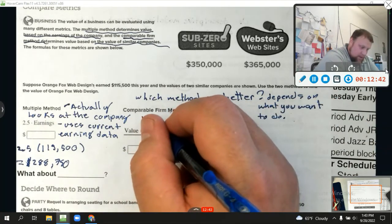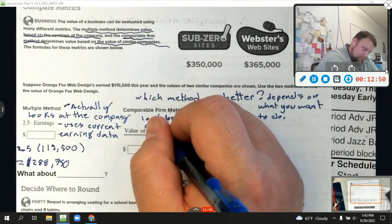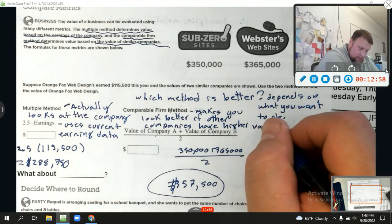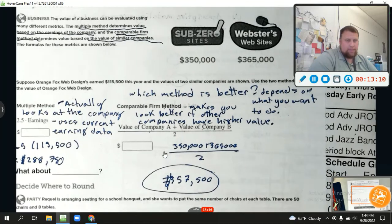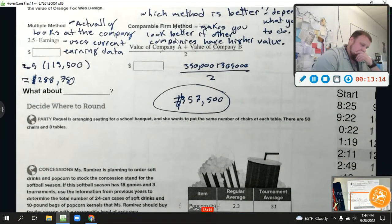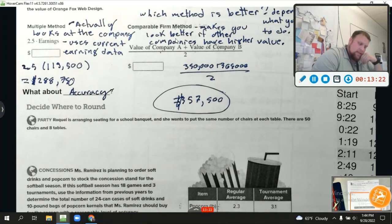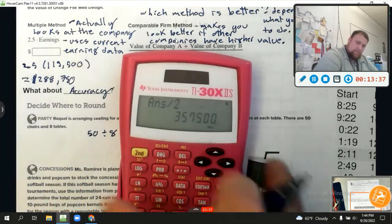Oh, what about accuracy? Let's write that down. What about accuracy? Let's write that down. Decide where to round. Raquel is arranging seating for a school banquet and she wants to put the same number of chairs at each table. There are 50 chairs and eight tables. Okay. So when you do that, we need to take the 50 and divide it by eight, which equals, six point two five chairs per table. Here's the problem. You may see it already. What are we going to do? Cut a couple of chairs in quarters or cut eight chairs in quarters and just put a quarter chair. That doesn't really, that doesn't make any sense. There is no possible way we can put the same amount of chairs to every table, but we can make it as even as possible. In fact, how about this? What does eight go into evenly that's close to 50? Well, I know eight times six equals 48.